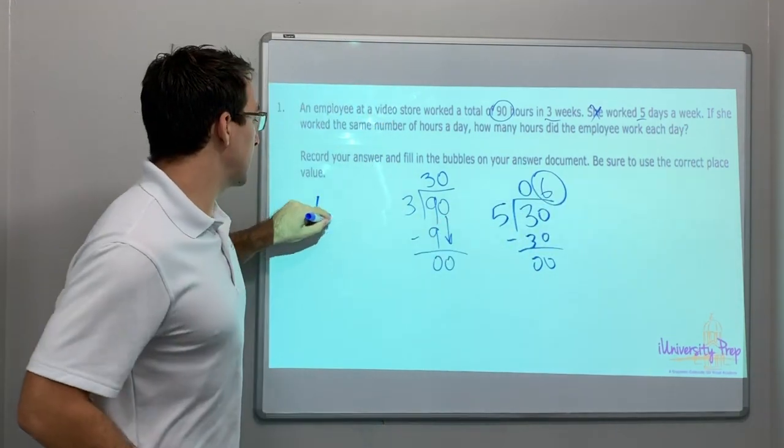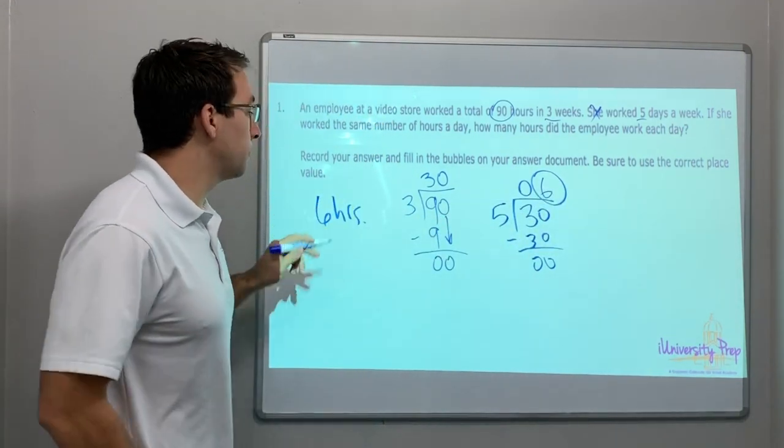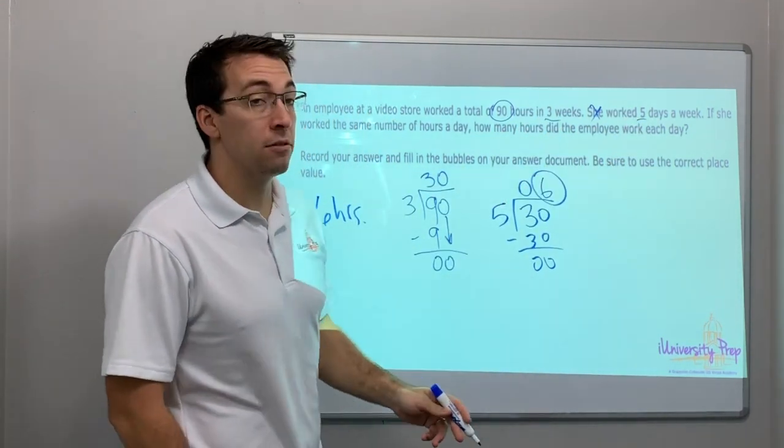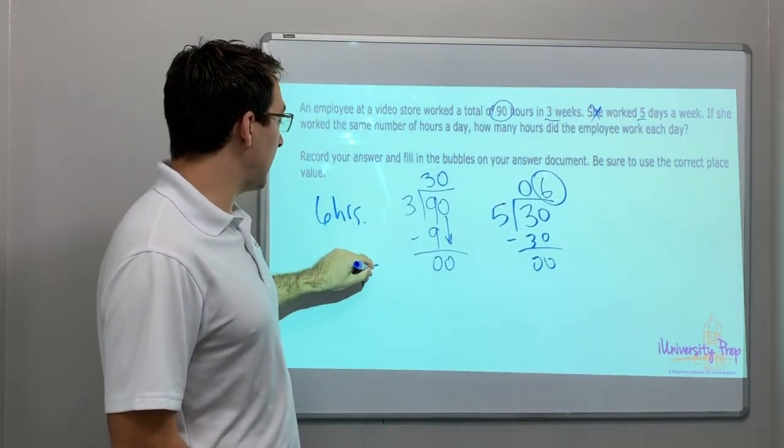So let's just six hours, and we'll check our answer. Three weeks times five days. Three weeks times five days. Well, that's 15.